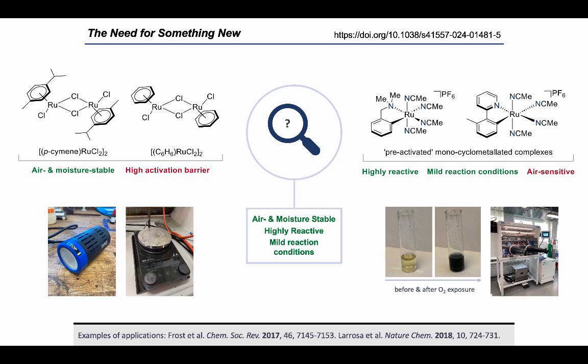This is demonstrated by the fact that over 15,000 reactions have been reported with ruthenium paracymene dimer in the last five years alone. That's 15,000 reactions where the conditions could potentially be improved as something that little bit more reactive was used in its place. This is exactly what we wanted to address. We wanted to develop a catalyst that is both air and moisture stable while having that high reactivity that allows it to work under mild conditions.